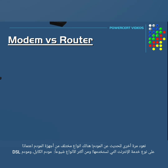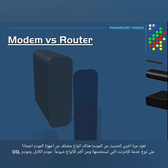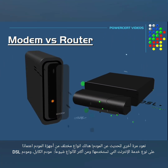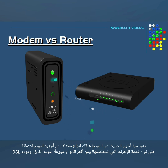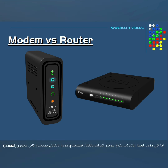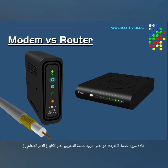There are also different types of modems. Two of the most common types are cable and DSL modems. So depending upon what type of internet you're going to use, you need to use the correct type of modem. Cable modems are connected to your home using a coaxial cable. Cable is typically provided by the same company that provides you with cable television, such as Comcast, which is one of the largest providers in the United States.